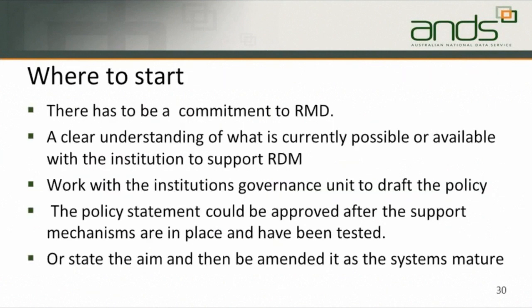Where to start? Firstly, there has to be a commitment to research data management. There has to be a clear understanding of what is currently possible or available within the institution to support research data management, because you may have a metadata hub, you may have a librarian who can support data management — you may have parts of it but you may not have all of the things available that were shown in the DCC slide. You will have to work with the institution's governance unit to draft the policy and that process will be detailed and demanding and you'll have to be patient. The policy statement could be drafted and approved after the support mechanisms such as data storage tools are in place and have been tested, or the policy could state the aim and then be amended as the systems mature.